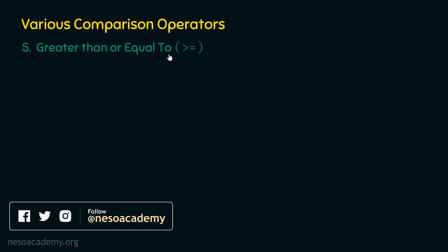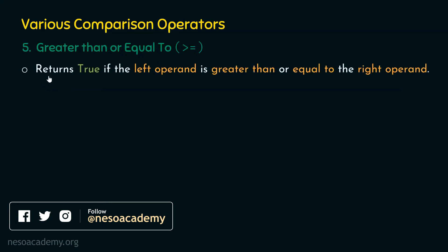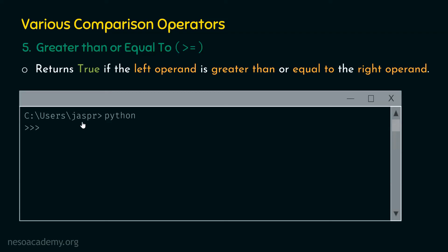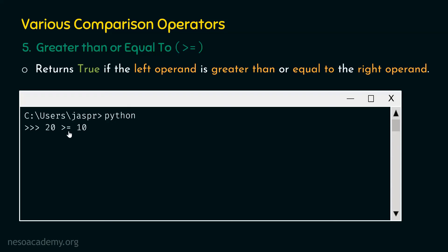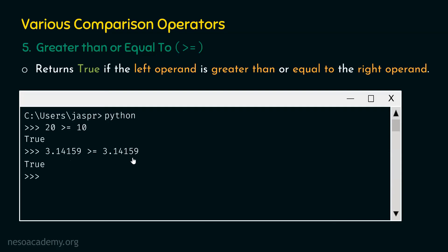The fifth operator is greater than or equal to (>=). This operator returns true if the left operand is greater than or equal to the right operand. For example, 20 >= 10 gives true because 20 is greater than 10, so the first condition itself is satisfied. Also, 3.14159 >= 3.14159 gives true — although the first condition is not satisfied, the second is, because 3.14159 is equal to 3.14159.